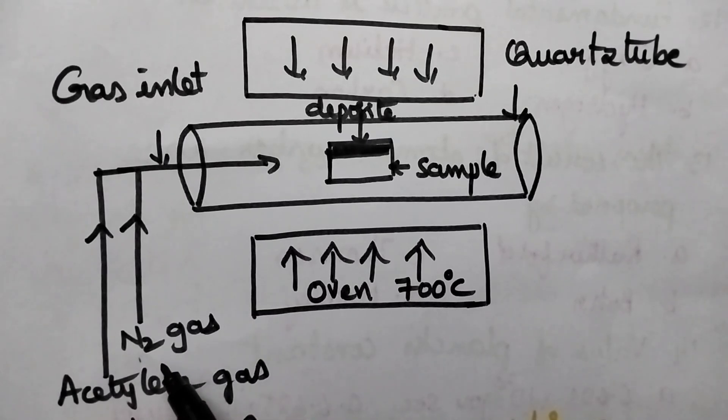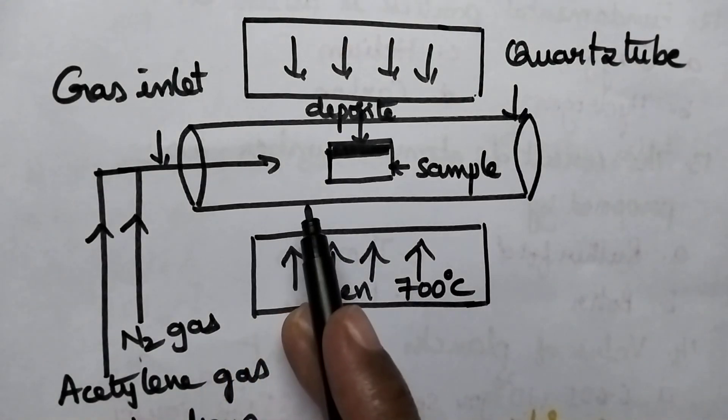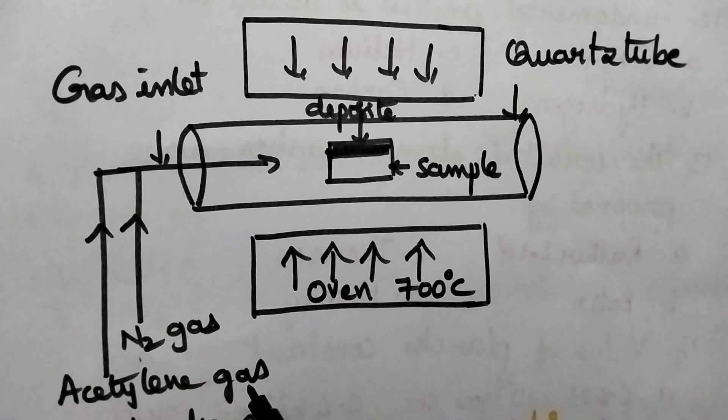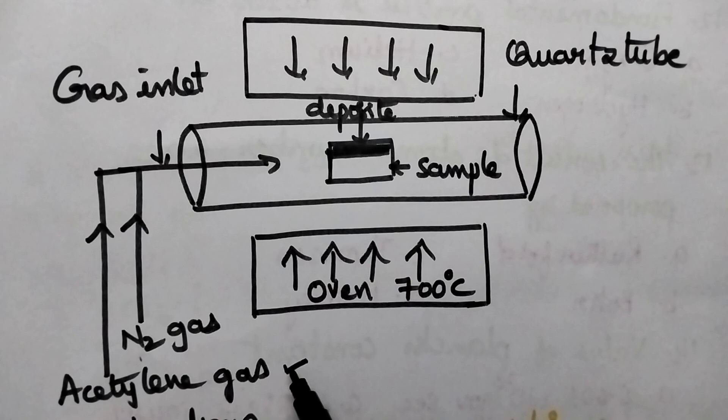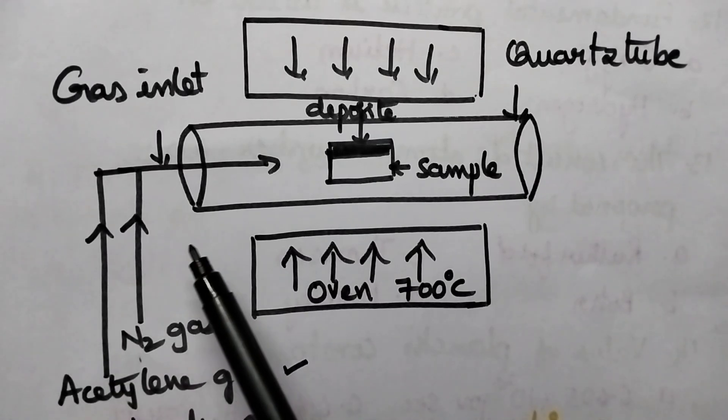Initially, nitrogen gas is passed through the quartz tube. Next, the carbon source will be present in the gaseous state. Here, let us consider acetylene gas as the carbon source, and it is passed through the quartz tube.